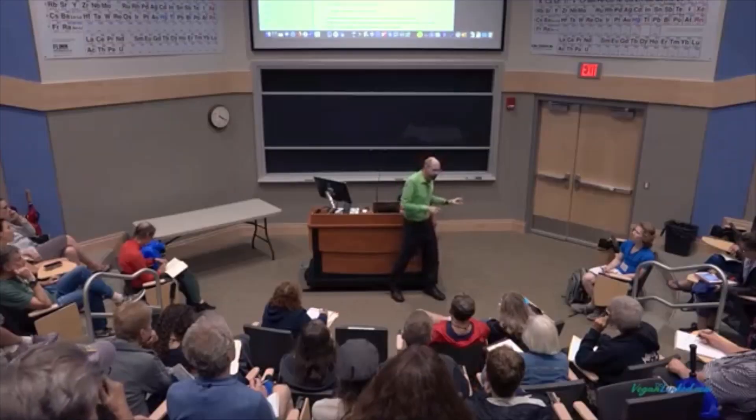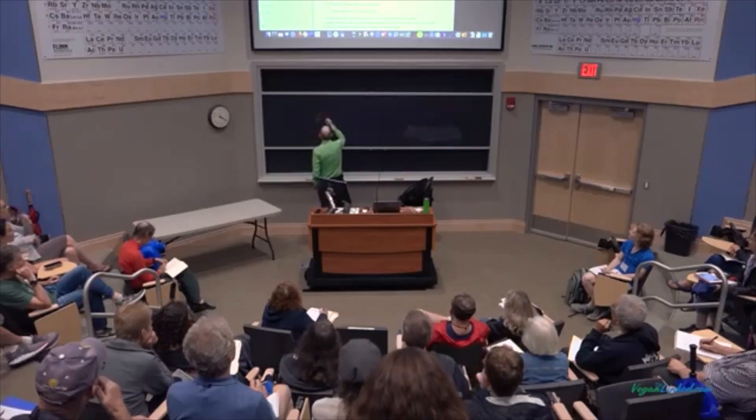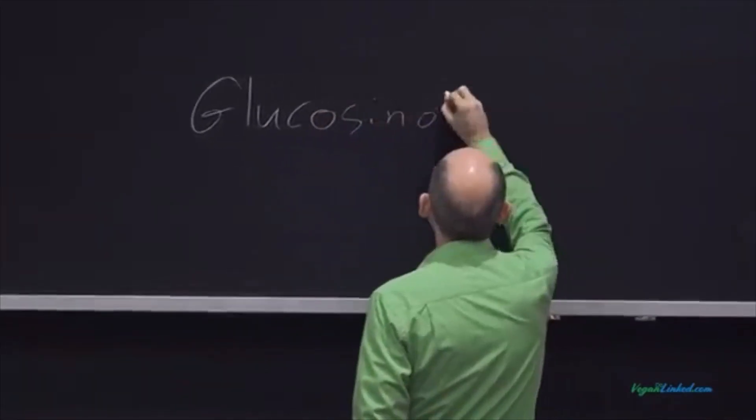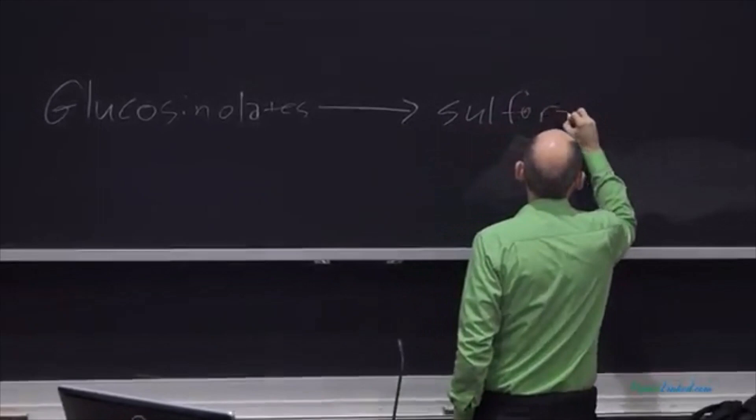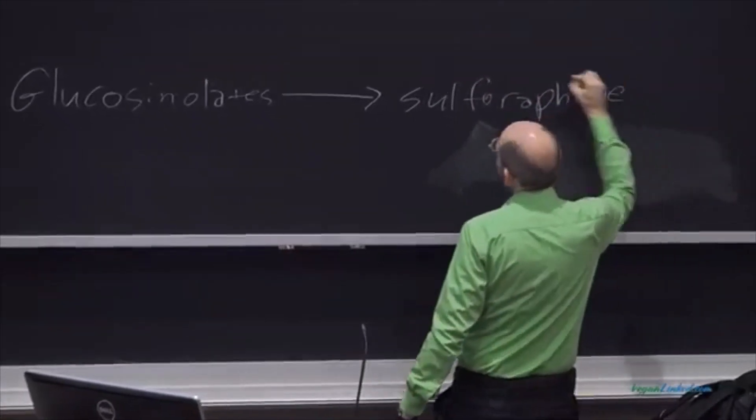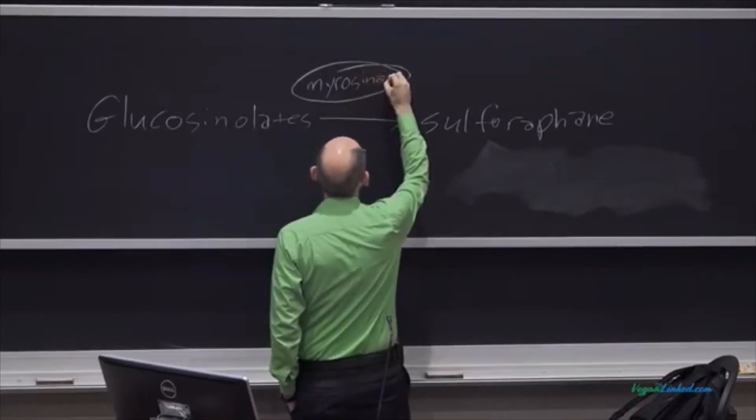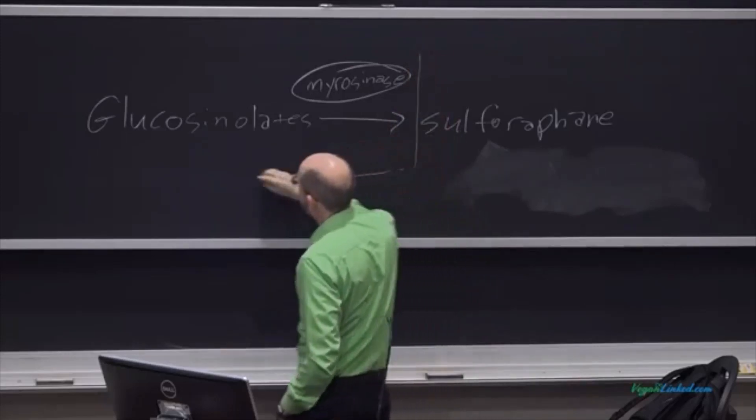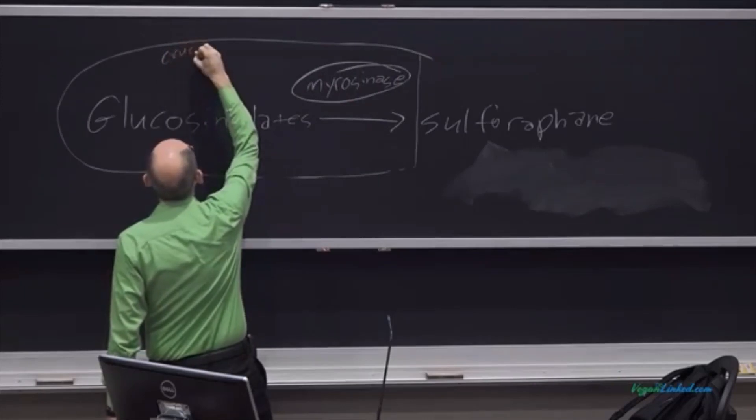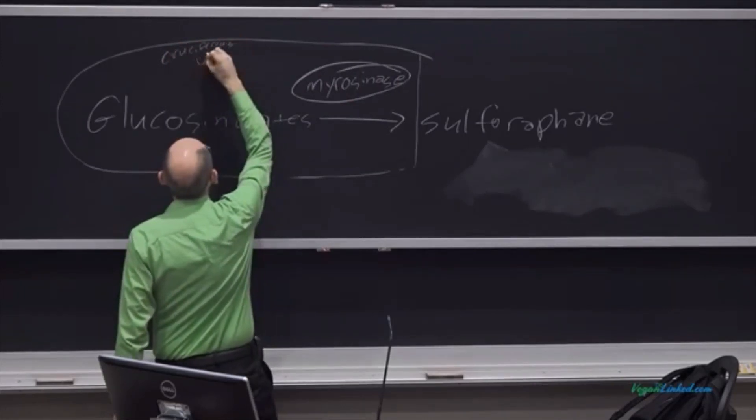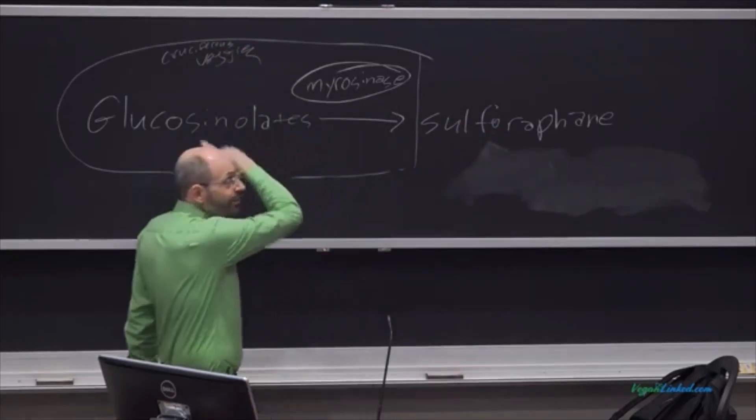So glucosinolates - we could write it on the board. Glucosinolates to sulforaphane, and this is catalyzed by an enzyme called myrosinase. This is what's inside cruciferous veggies. But this is what we want, and this is not what's in. This is all that's in the vegetables. This is what we want.